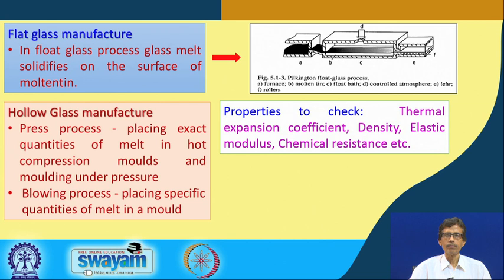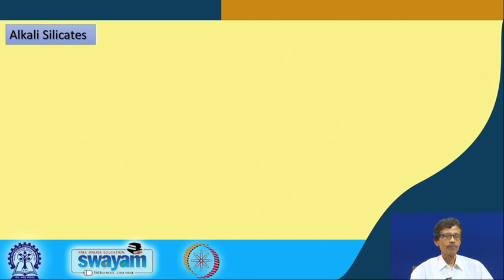The properties we check for all different types of glass material — whether flat glass, flint glass, or hollow glass — include their thermal expansion coefficient, density, elastic modulus, and chemical resistance: how strong they are and how they repel chemical attack.